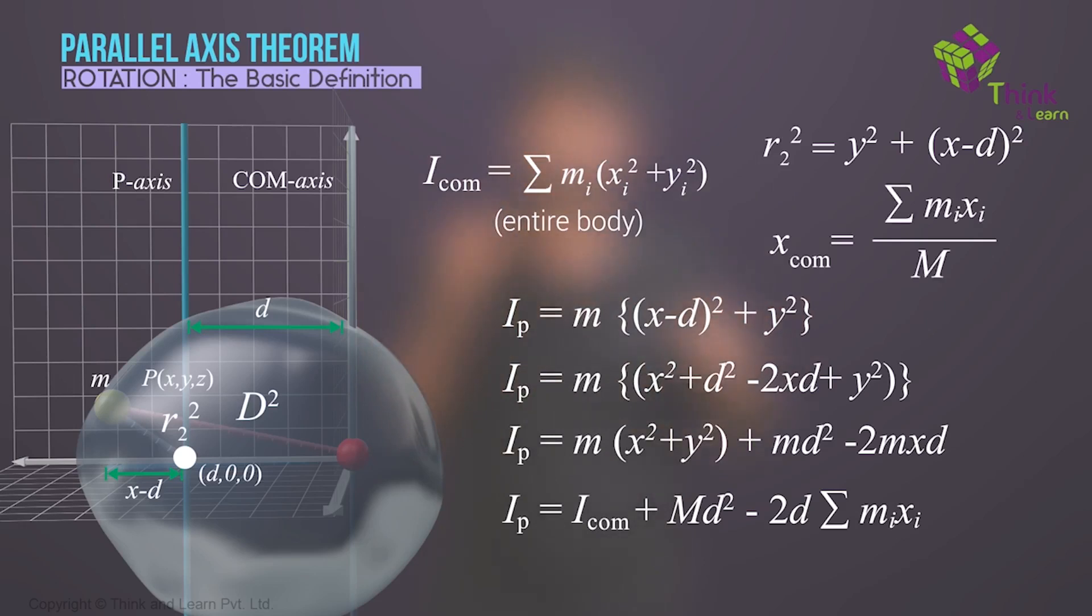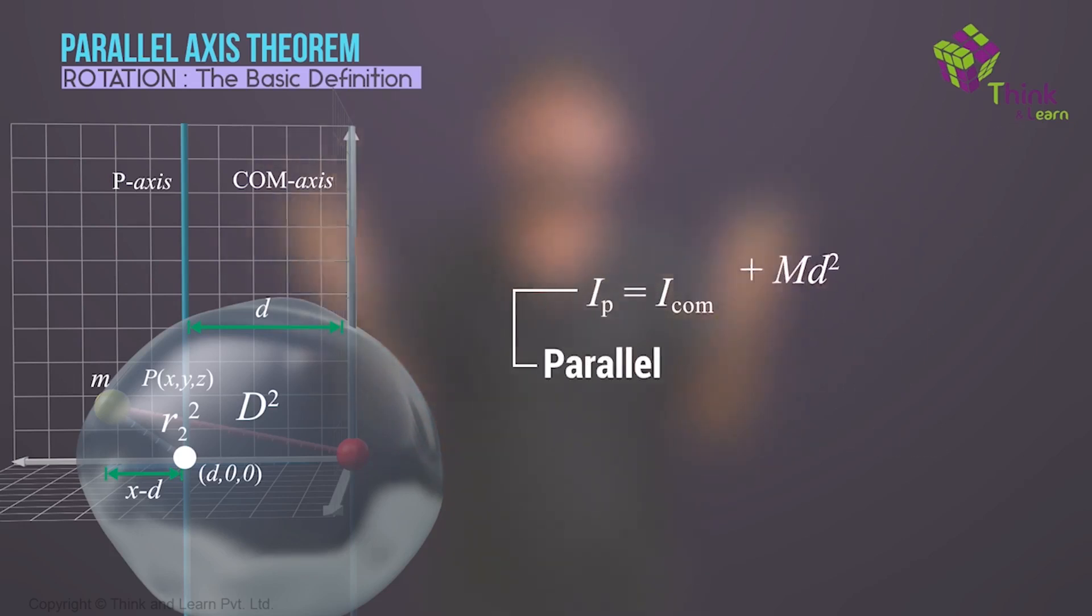But what is that equal to? That's the numerator of my XCM. X center of mass is sigma mi xi divided by the total mass. But now in this case, my XCM is 0, which means this numerator has to be 0. So that term vanishes, which gives you the IP, which is where you began with, equals your ICM plus total mass into d squared. In effect, you have proved the parallel axis theorem.